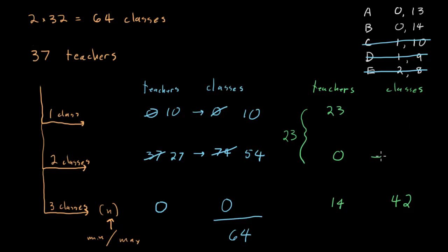For our number of classes, zero coming from the two class group and 23 teachers each teaching one class means we get 23 classes taken care of by the one class group. And this altogether leads to what? Total number of classes would be 23 plus 42 or 65. And that is a problem. We need 64 classes and we found that when we put 14 here and tried to make our numbers work, we got 65. So let's think about this for a second. Does that prove that 14 doesn't work?